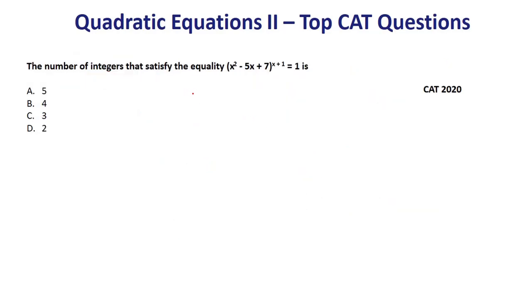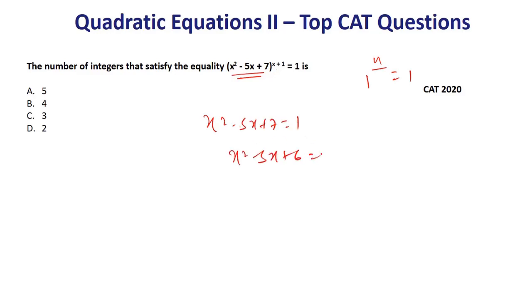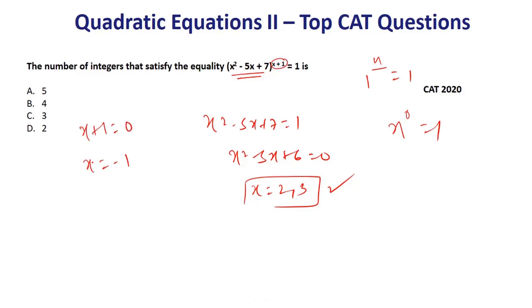Next: how many integers satisfy (x² - 5x + 7)^(x+1) = 1? Case 1: base = 1, so x² - 5x + 7 = 1 → x² - 5x + 6 = 0, giving x = 2 and x = 3. Case 2: any number raised to the power 0 equals 1, so x + 1 = 0, giving x = -1.